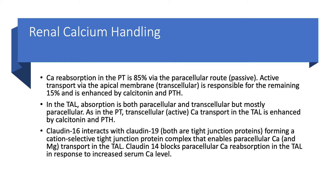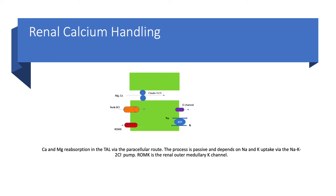Claudin-16 interacts with claudin-19 — both are tight junction proteins — and they form a tight junction complex. This tight junction complex is cation selective, and it enables not only paracellular calcium reabsorption but also magnesium reabsorption in the thick ascending limb. Claudin-14, on the other hand, blocks this paracellular calcium reabsorption in the thick ascending limb, and that happens when calcium levels are elevated, because in that case you don't want to reabsorb too much calcium. This is the same diagram shown when we discussed magnesium — claudin-16 and claudin-19 form the tight junction complex through which calcium and magnesium pass via the paracellular route.